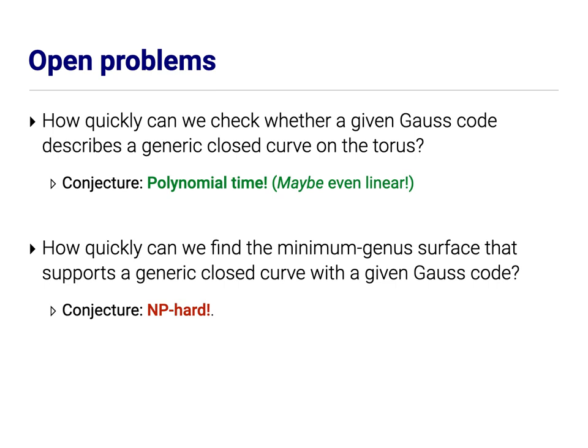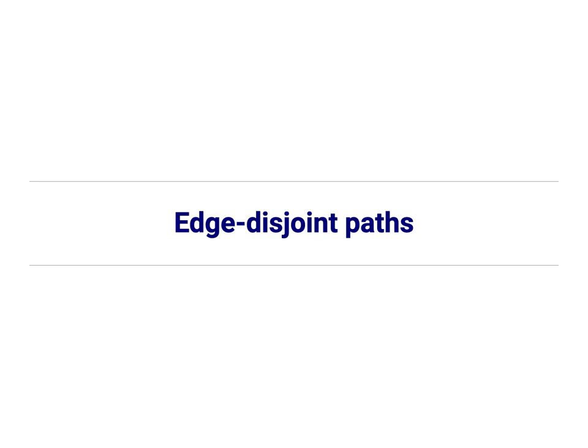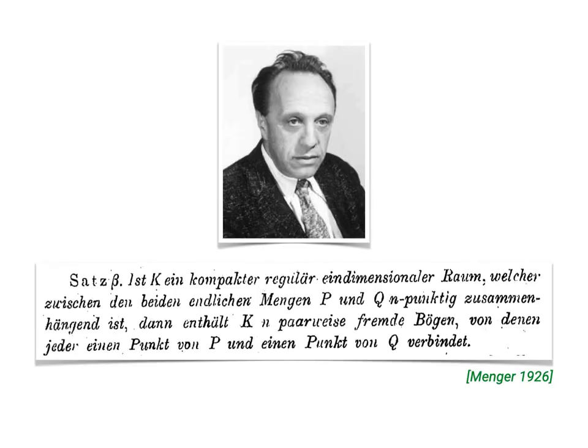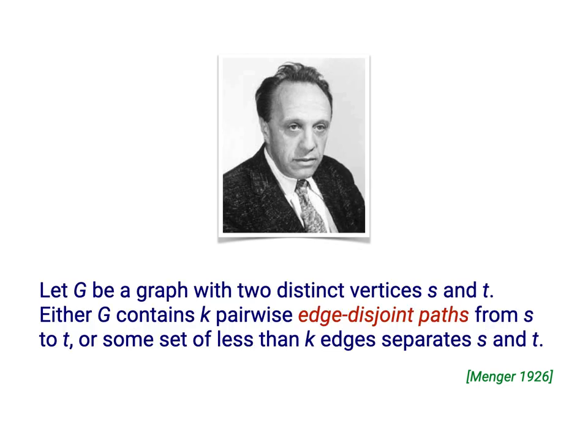Now, the first one, that probably was unfamiliar to most of the people in the room. This one is going to be very familiar. This open question is based on a classical theorem by Karl Menger, approved in 1926. Here's one version of Menger's theorem. Let G be a graph with two distinct vertices, S and T. Either G contains K pairwise edge disjoint paths from S to T, or some set of less than K edges separates S from T.